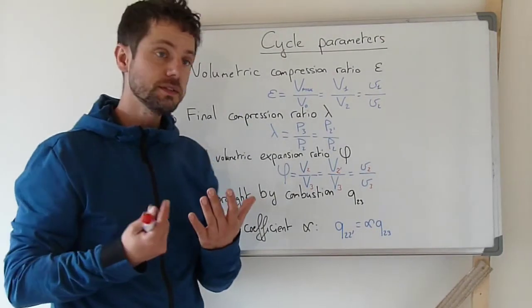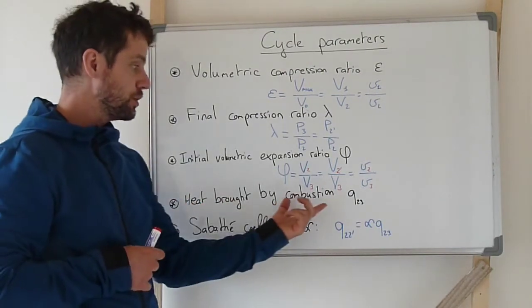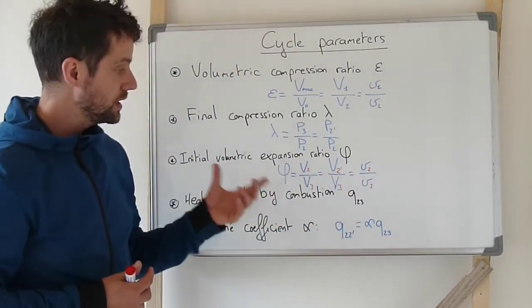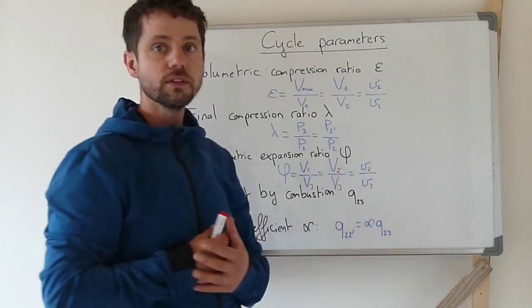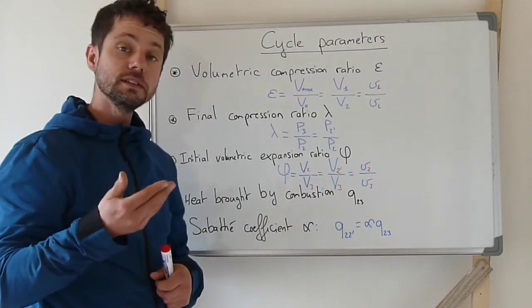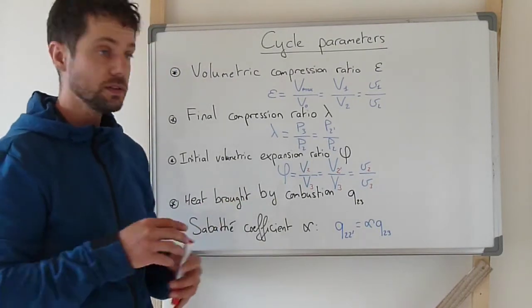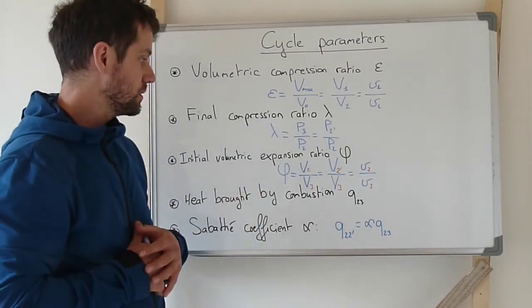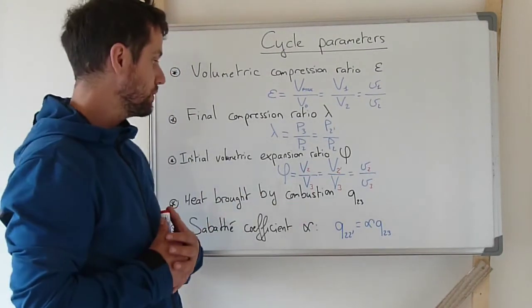Then, another parameter of the cycle is the heat that is brought by the combustion. So, here I have noted the specific heat—the heat divided by the mass inside the cylinder between points 2 and 3 during the combustion. And this can be written also as a function of the lower heating value and of the parameters about how the combustion is taking place: the air-fuel ratio and the coefficient of excess air.